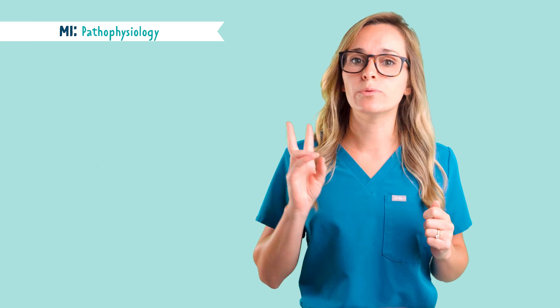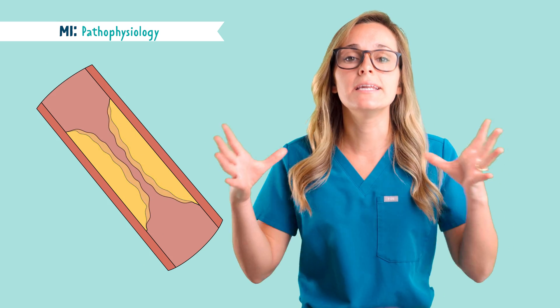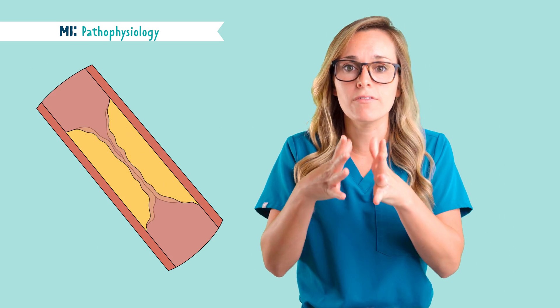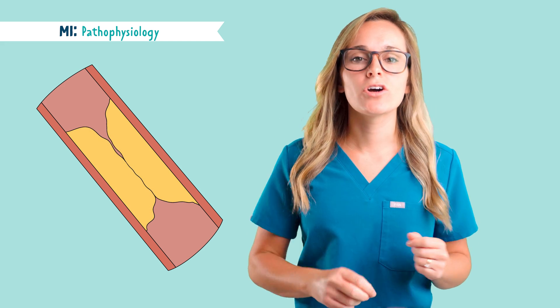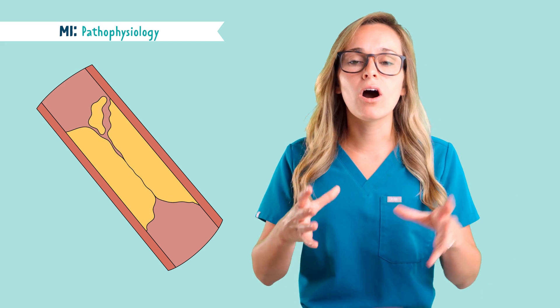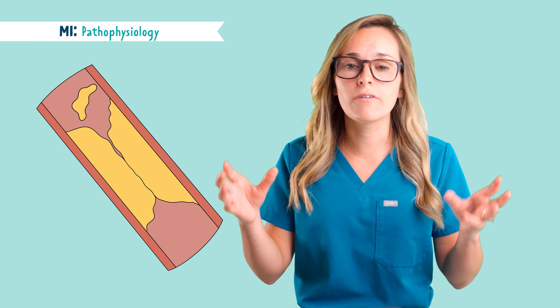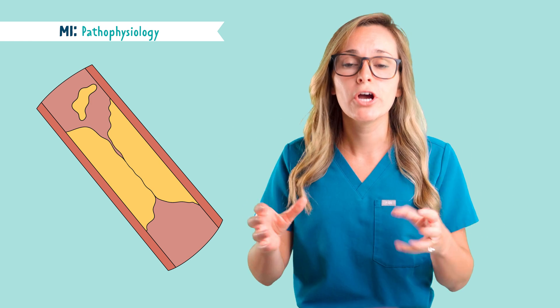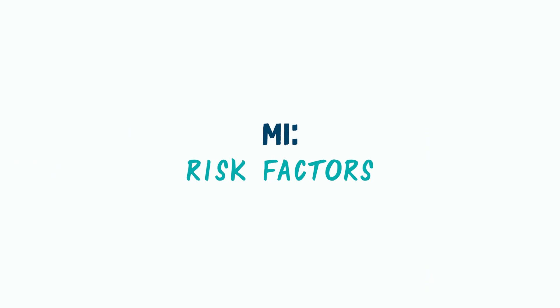Plaque can cause an MI in two different ways. The first way is excessive collection or buildup causing narrowing of the vessels. The second way is that the plaque on the vessel walls can break off and rupture, going straight to the heart and blocking those main arteries.